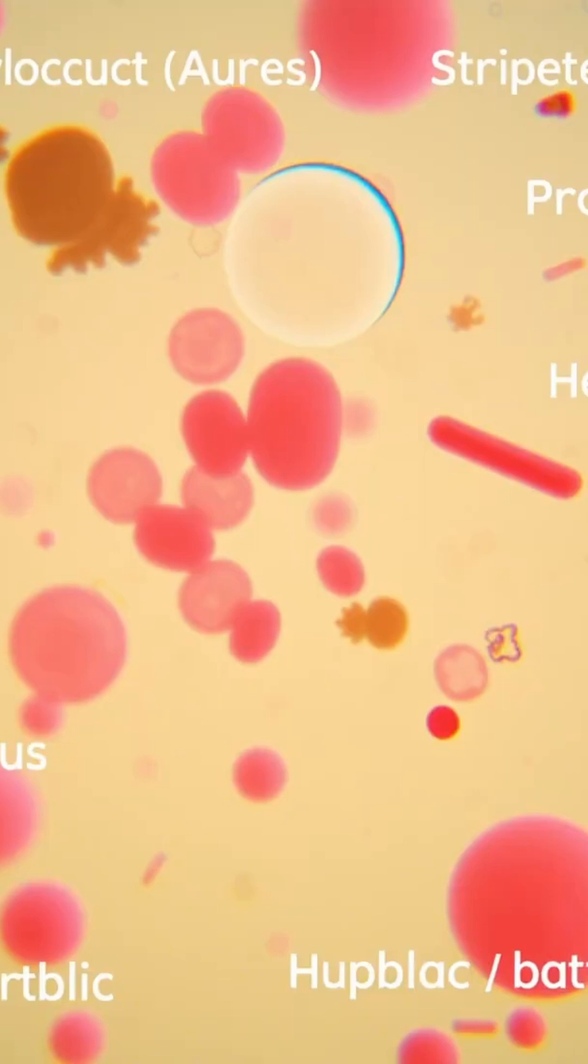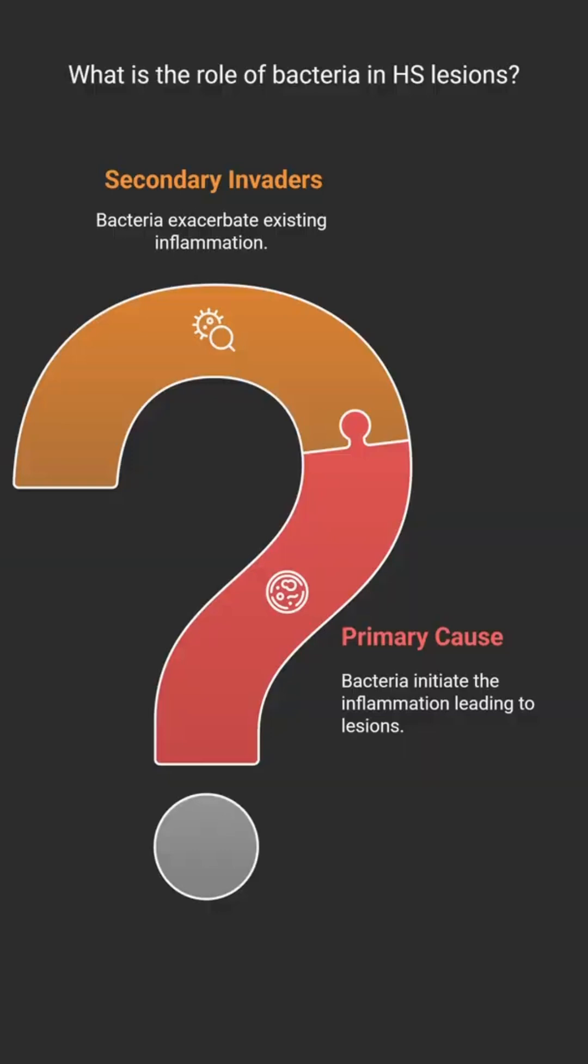That's the million-dollar question, really. It's still debated. You definitely find bacteria in HS lesions, common ones like staph aureus, strep, others like proteus, and anaerobes too. But is it chicken or egg? Did the bacteria cause it, or did they just move in once the inflammation started?